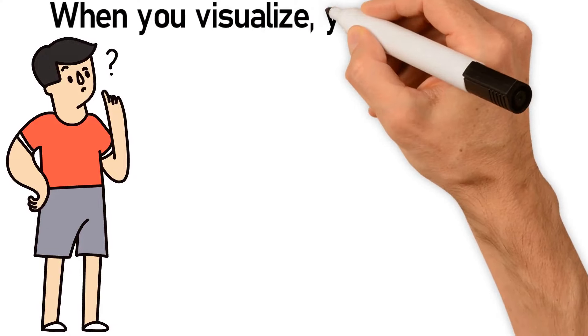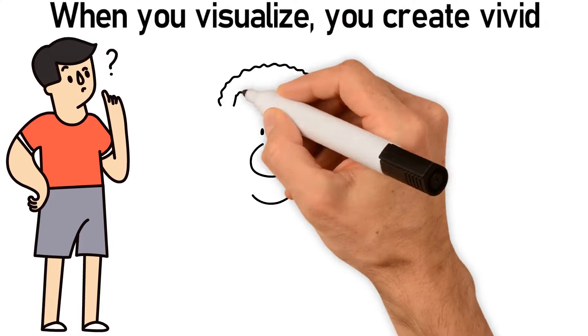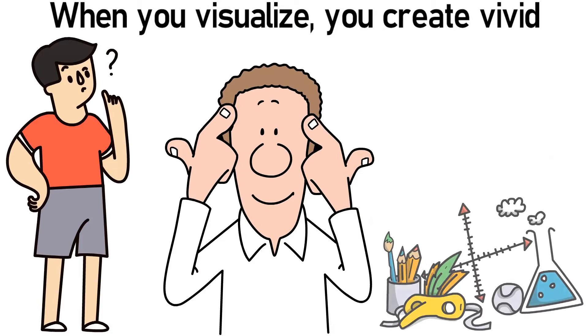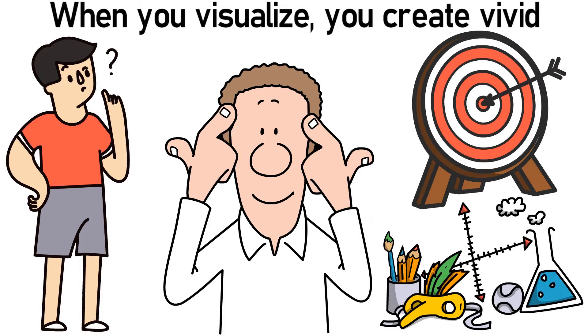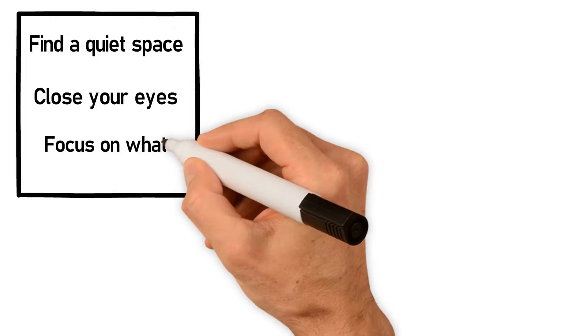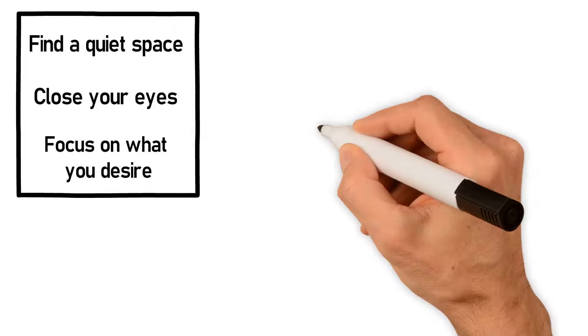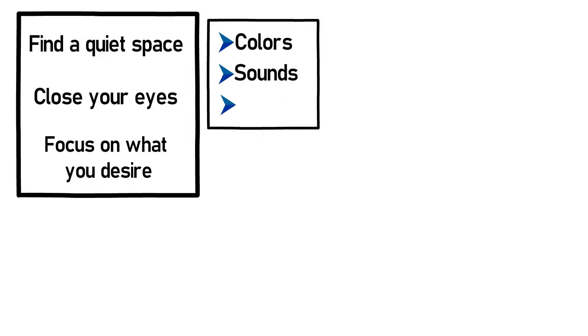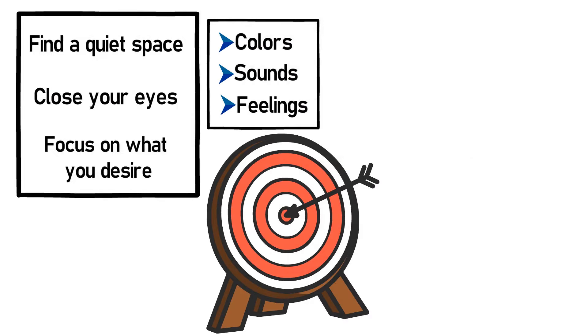When you visualize, you create vivid and detailed images in your mind as if you're experiencing your deepest desires and goals. To effectively visualize, find a quiet space, close your eyes, and focus on what you desire. Imagine the colors, sounds, and feelings associated with your goal.